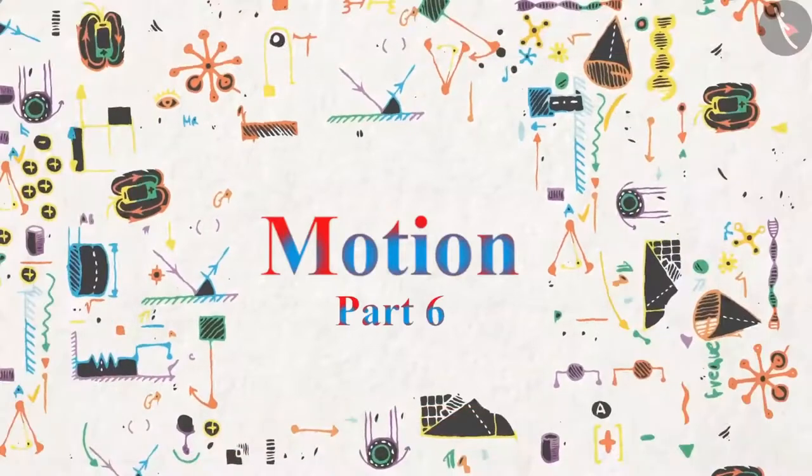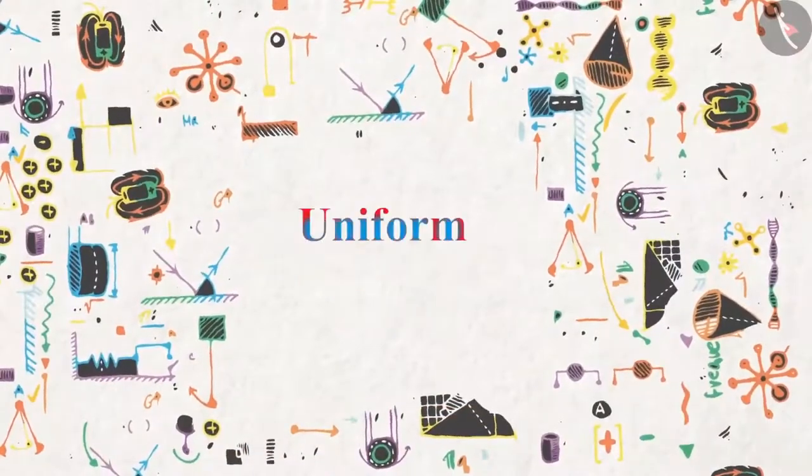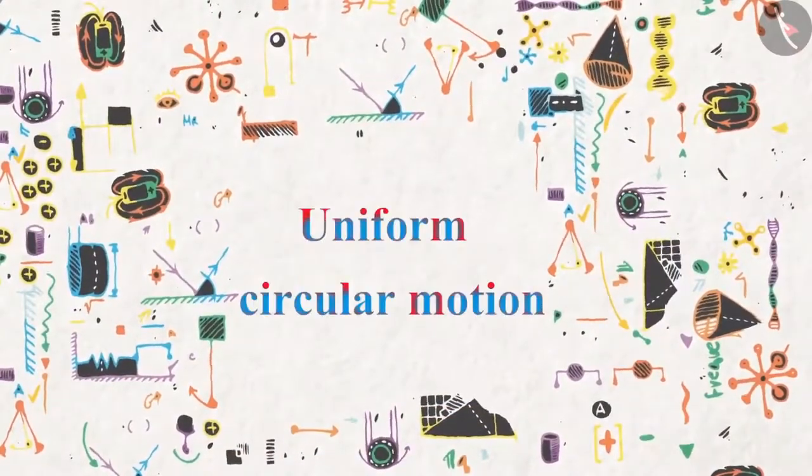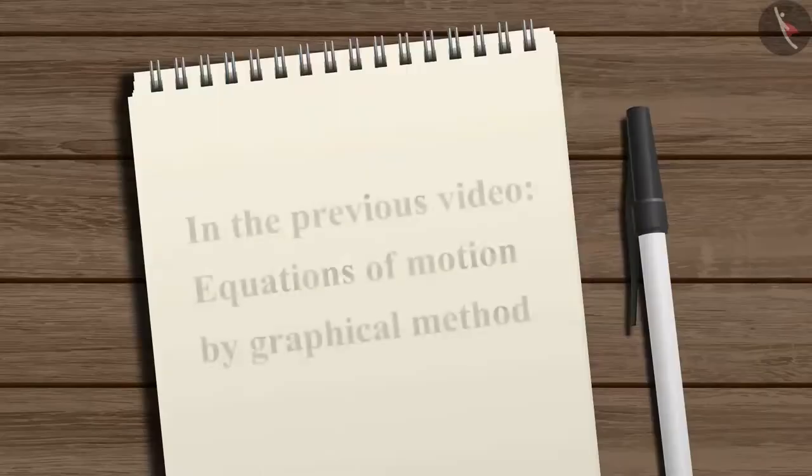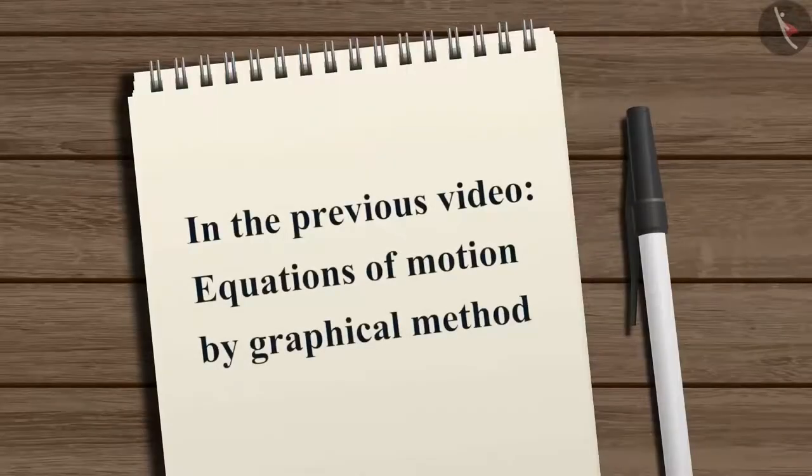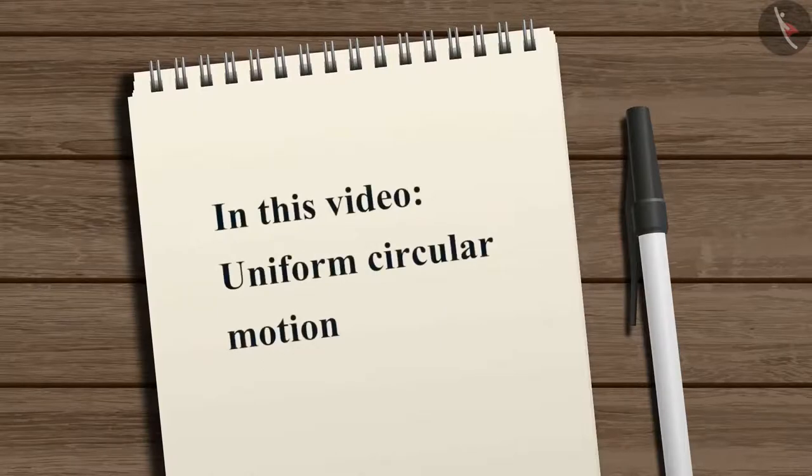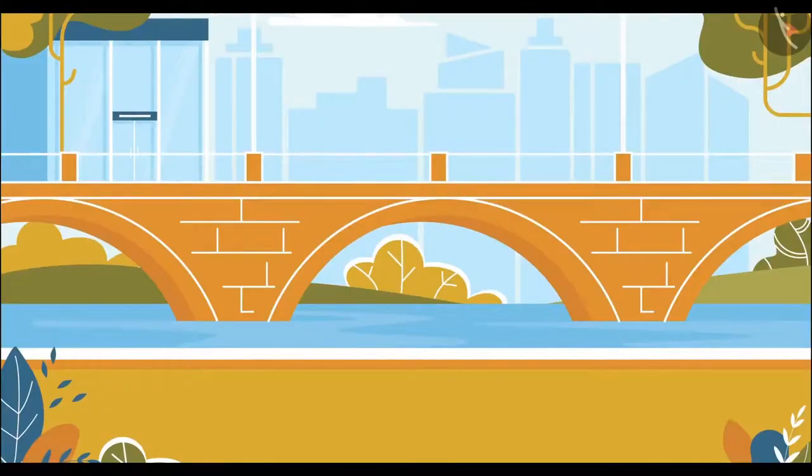Motion Part 6: Uniform Circular Motion. In the previous video we learned to represent the equations of motion by graphical method. In this video we will learn about uniform circular motion. We have studied earlier that the body accelerates when there is a change in its velocity.